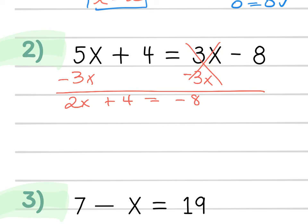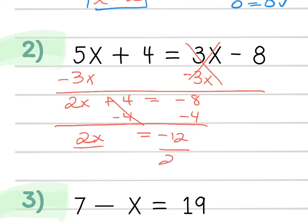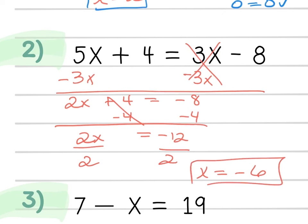I need to do a couple more steps. Next, I'll get the constants together by subtracting 4 from both sides, leaving 2x = -12. Then divide both sides by 2, giving x = -6. You could have moved the 4 first and the 3x second — the order doesn't matter — but you do have to divide last on this one. To verify, plug x = -6 back in to confirm you get a true statement.